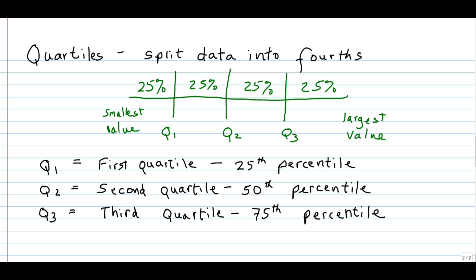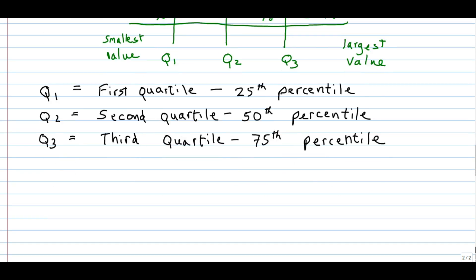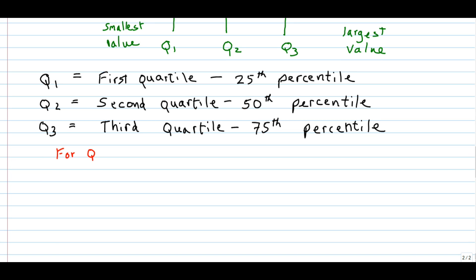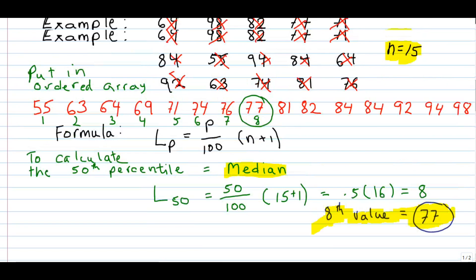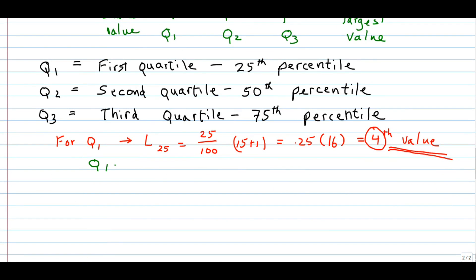To calculate these quartiles, we can use the percentile formula since quartiles are just specific percentiles. For Q1, we use the formula L subscript 25 equal to 25 divided by 100 times N plus 1, so 15 plus 1, which is 0.25 times 16, equal to 4. And it's not 4, but it's the fourth value. Let's scroll up to the ordered array — and we can see that the fourth value is 69. So Q1 is equal to 69.